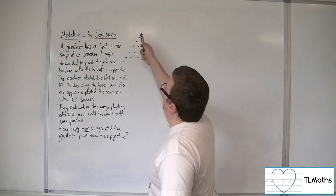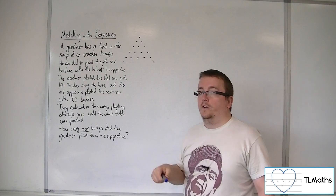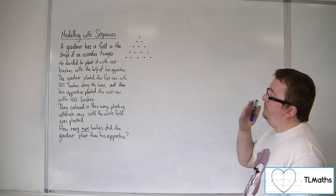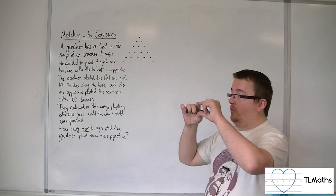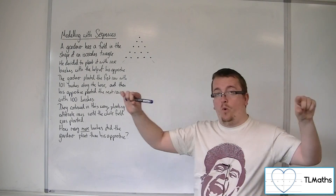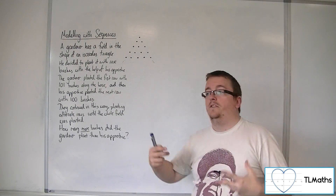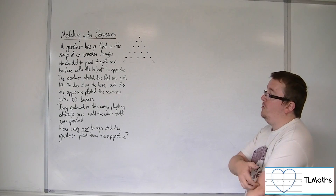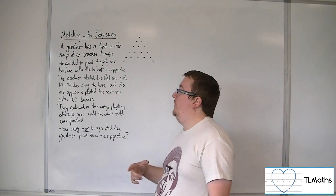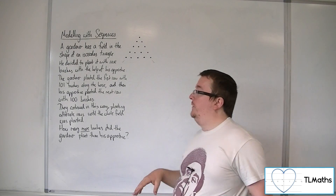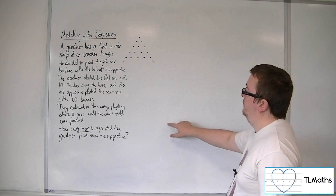So this is what the situation would look like — this is what the top of the field would look like. The gardener is clearly planting the row with 101 bushes, then 99, then 97, then 95, and so on — so all the odd-numbered rows. And the apprentice is planting all the even ones: 100, 98, 96, and so on.